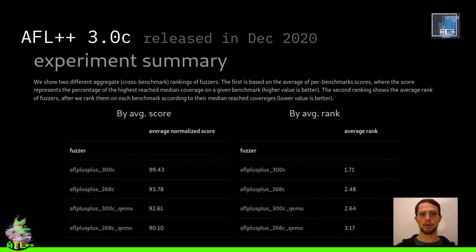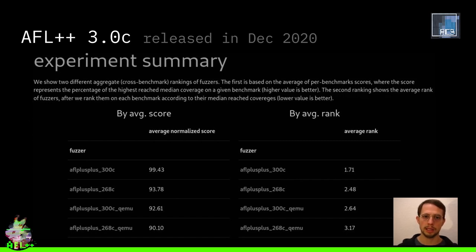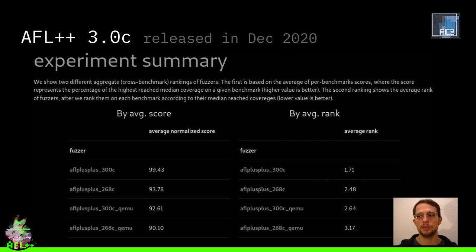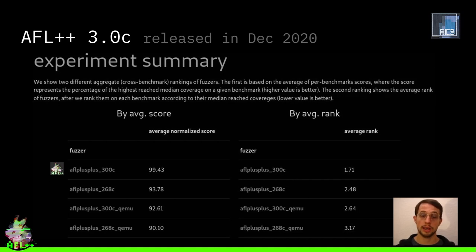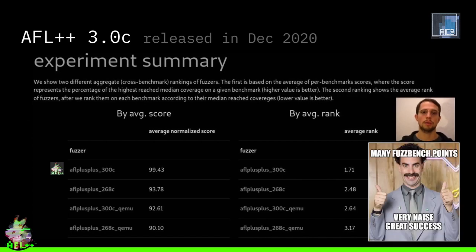We managed to increase the fuzzing performance — overall performance, execution speed, and also pathfinding and bugfinding — over the course of the last one and a half years pretty dramatically. Here you can see the Fuzzbench experiment summary. Fuzzbench is a pretty good offering by Google, giving fuzzer authors the possibility to test their fuzzers against real targets. You can see AFL++ 2.68c in comparison to AFL++ 3.0, which is the latest version and pretty advanced compared to the old-school AFL when we forked it.